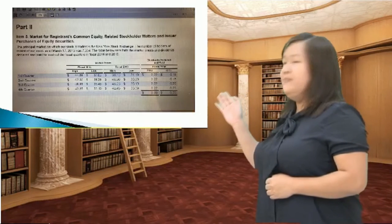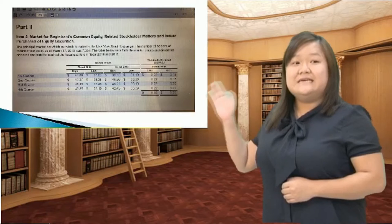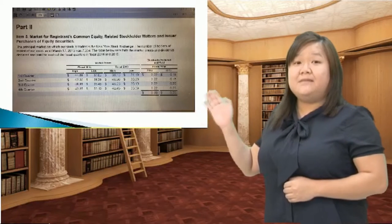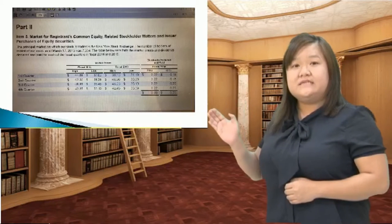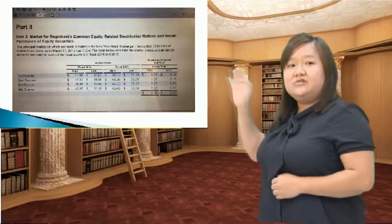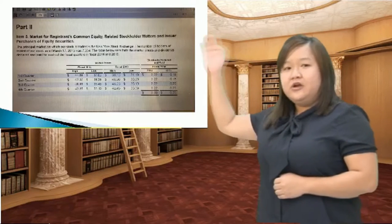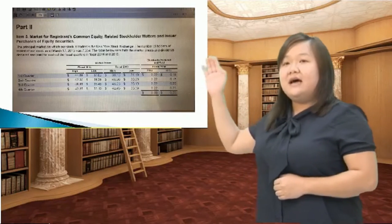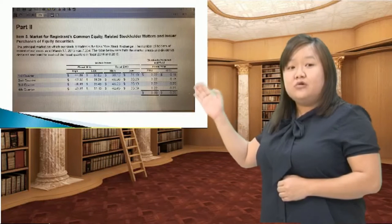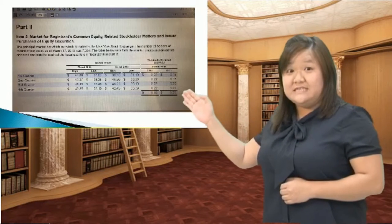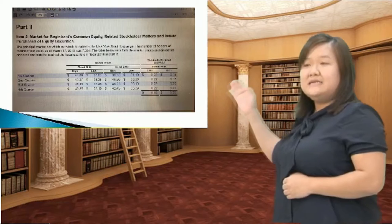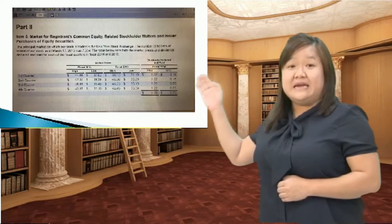This table talks about market prices and dividends declared and paid for each of the fiscal quarters in the years 2013 and 2014. If you look at the year 2013, the highest that our stock has been sold for is $46.56, whereas the lowest is $31.19.